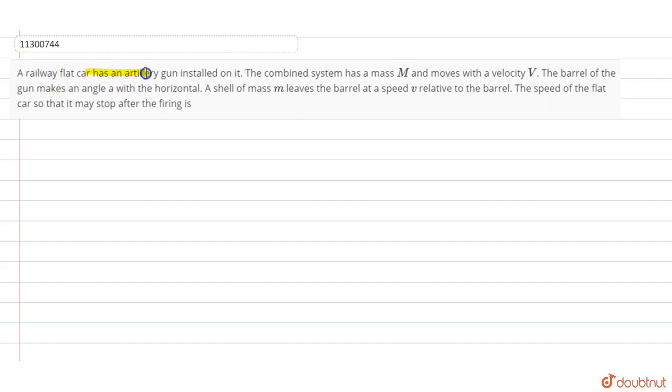This is a railway flat car which has been installed with an artillery gun. The combined system has a mass M and moves with a velocity V.